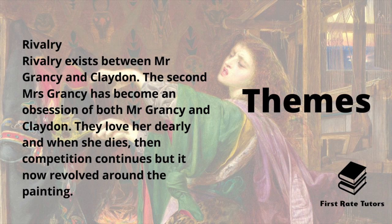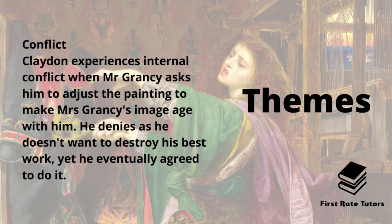The third theme is rivalry. Rivalry exists between Mr. Grancy and Claydon — the second Mrs. Grancy has become an obsession for both men, and when she dies the competition continues but now revolves around the painting. The fourth theme is conflict. Claydon experiences internal conflict when Mr. Grancy asks him to adjust the painting to make Mrs. Grancy's image age with him. He refuses at first as he doesn't want to destroy his best work, but eventually agrees — and we can see that he becomes very resentful of having to do so.